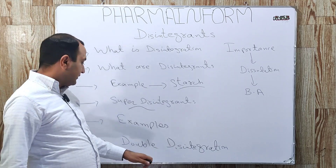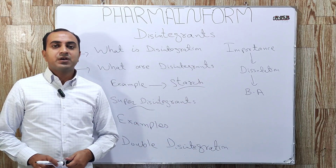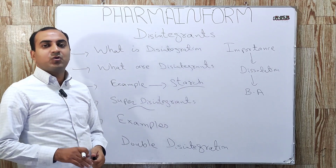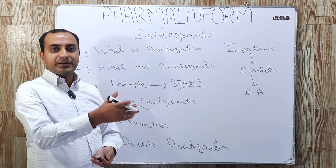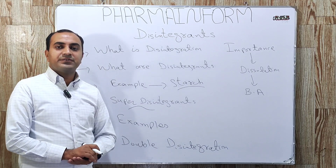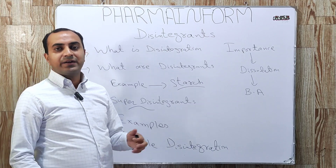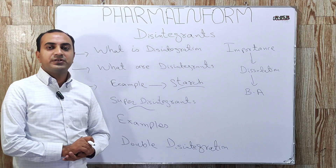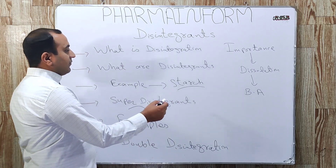One of the most important phenomena is double disintegration. In double disintegration, disintegrants are added at two points. First, a portion of the disintegrants are added before the wetting step — this is known as intra-granular disintegrants. The remaining portion is added during final blending — this is known as extra-granular disintegrants.